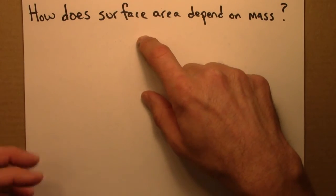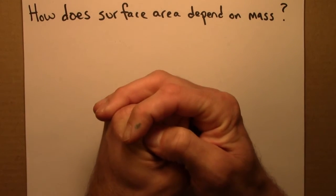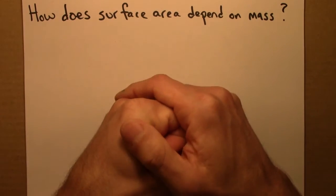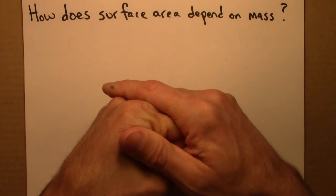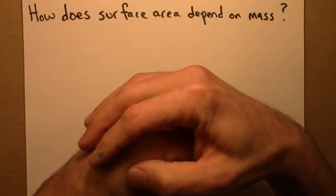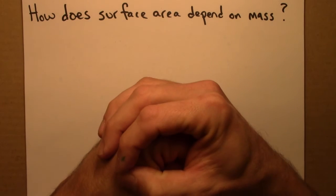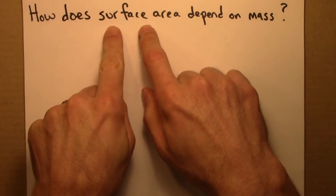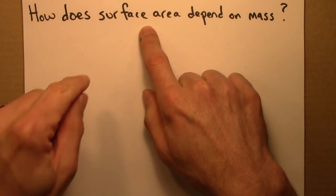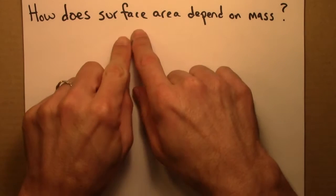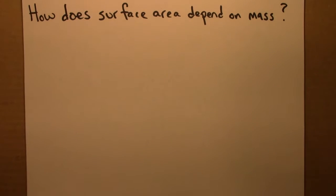The argument goes that creatures generate heat through metabolism and they have to get rid of that heat so they don't catch on fire or melt. The way they get rid of heat is by losing it through their surface, so how big a surface area you have determines how big a metabolic rate you can have. So let's think about surface area.